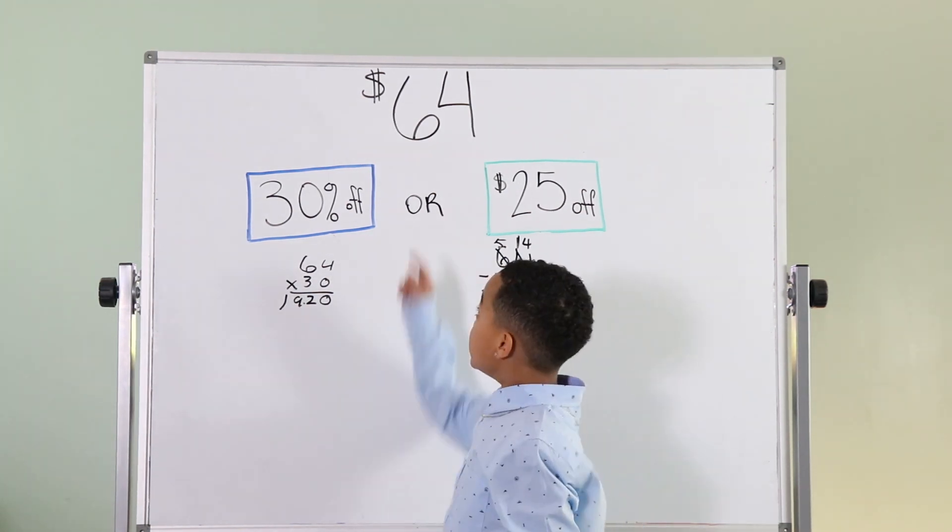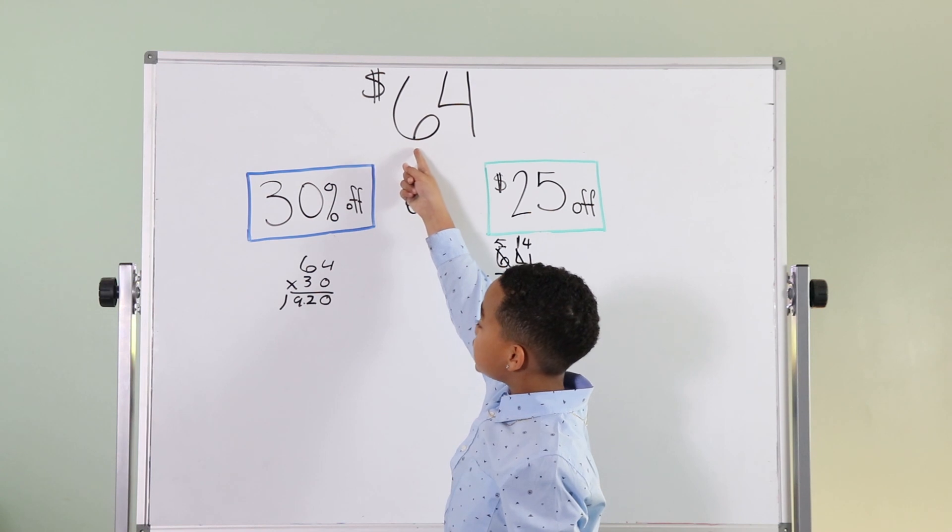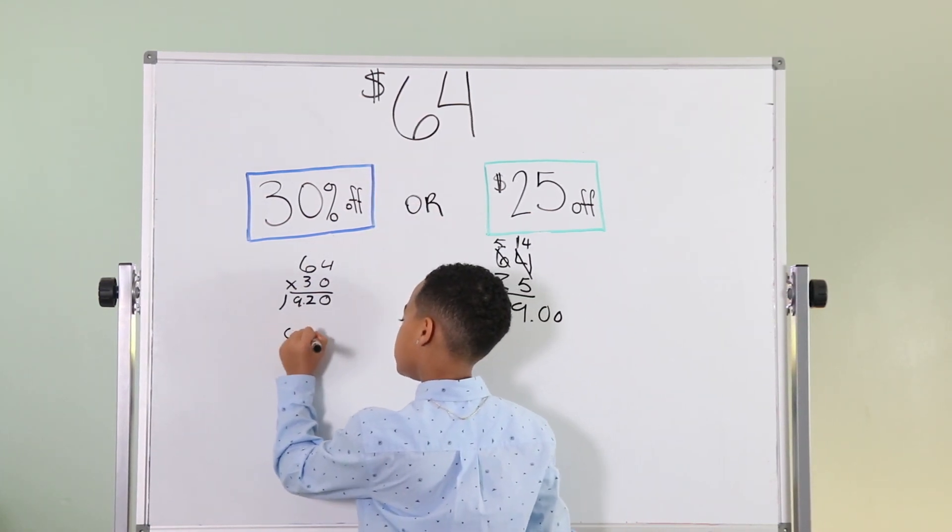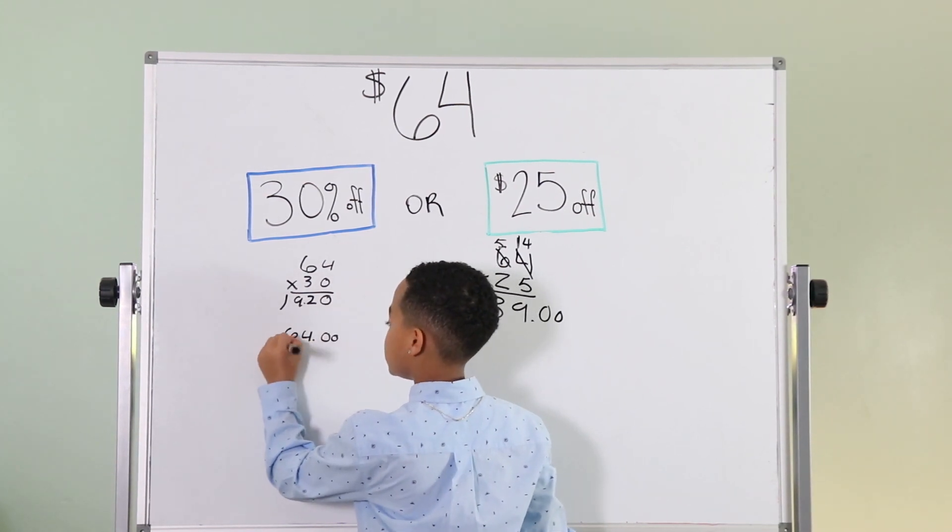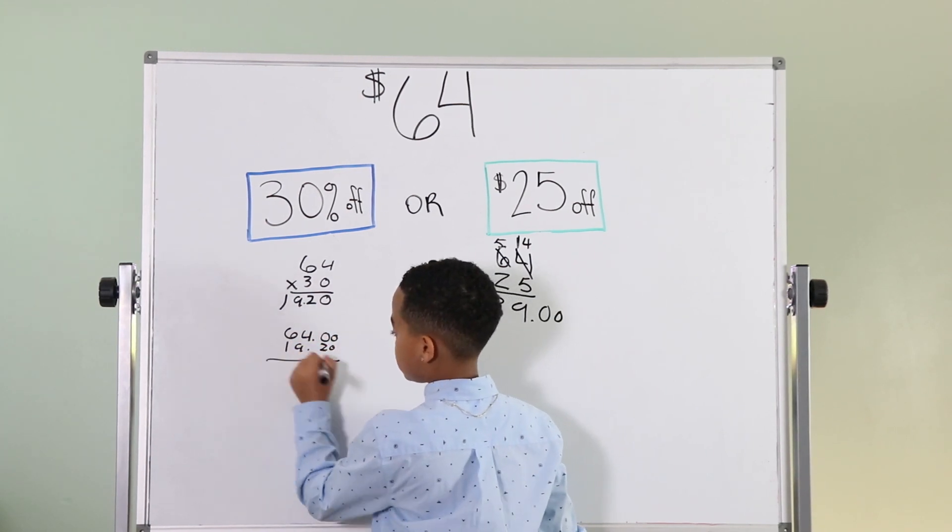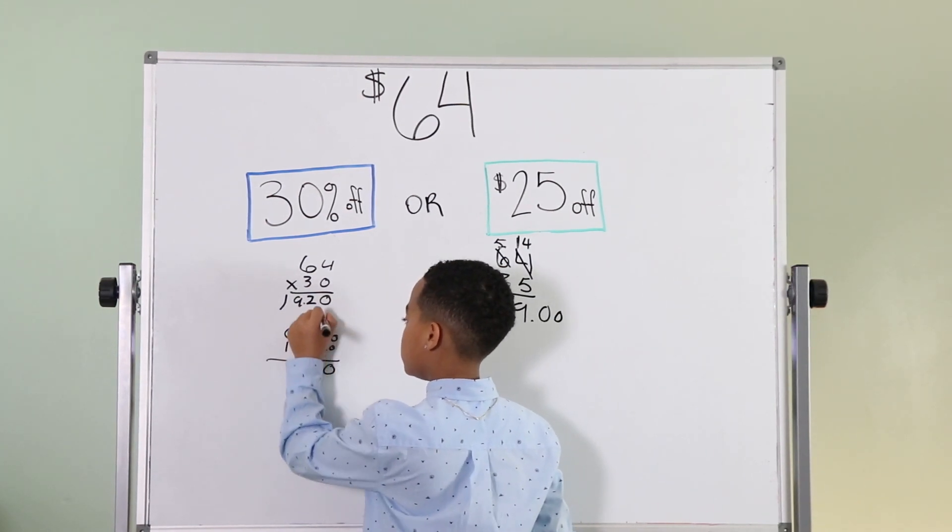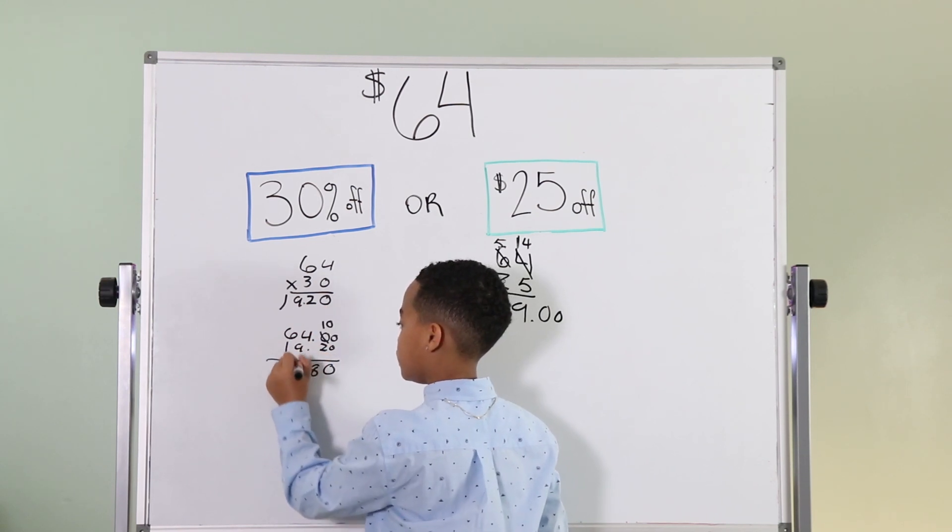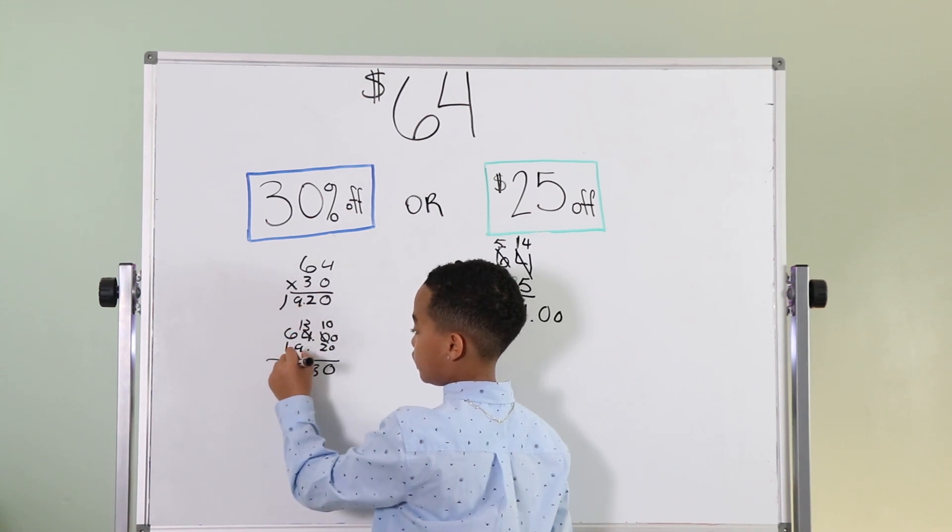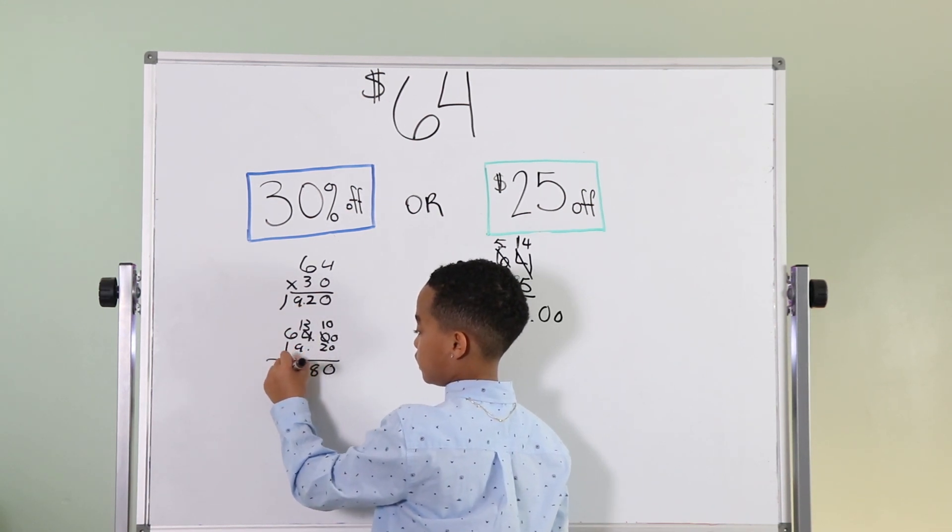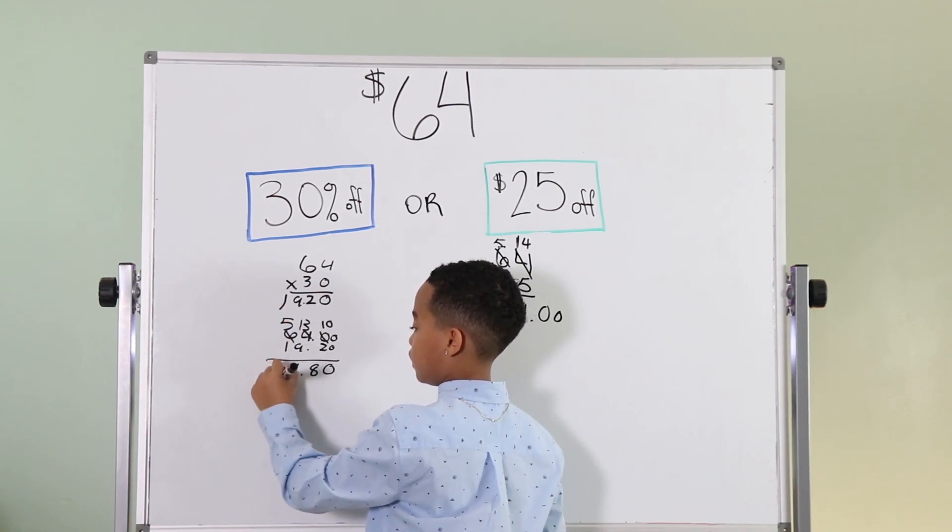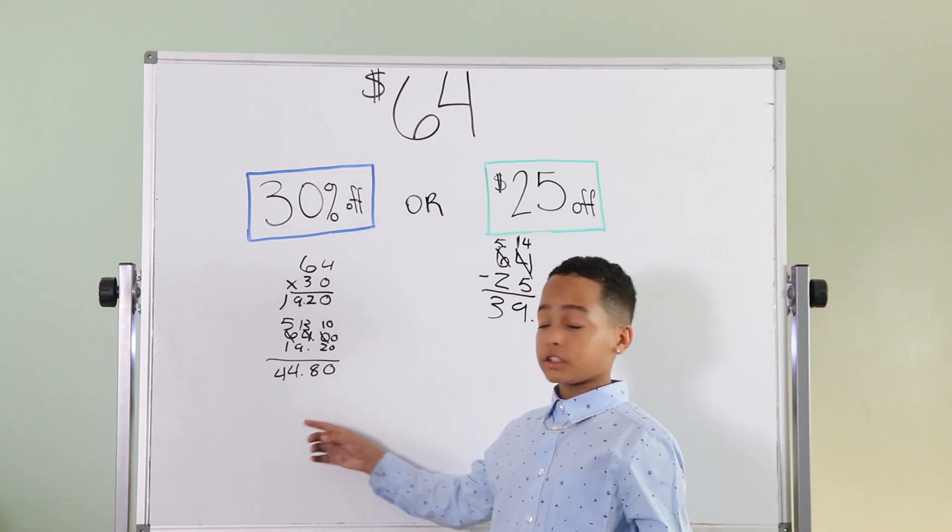Second thing we're going to do is subtract the original price 64 by $19.20. Put your decimal, $19.20. So, 0, 10, 8, 8, 2, 3, 10, 4, 5. So the answer is $44.80.